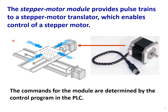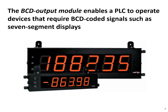The stepper motor module provides pulse trains to a stepper motor translator, which enables control of a stepper motor. It is a user-specific module for the stepper. The commands of the PLC are determined by the control program. The BCD output module, or binary coded decimal output module, enables the PLC to operate devices that require BCD coded signals, such as seven-segment displays. To change the setting of these displays, we need a BCD output module.